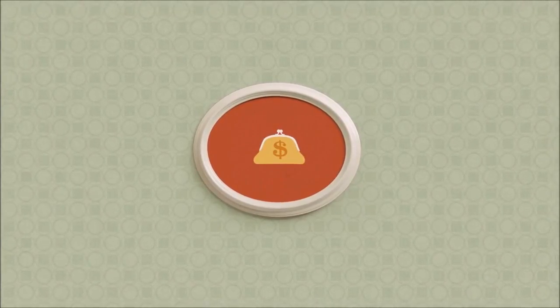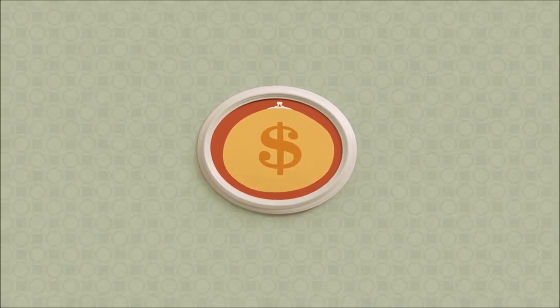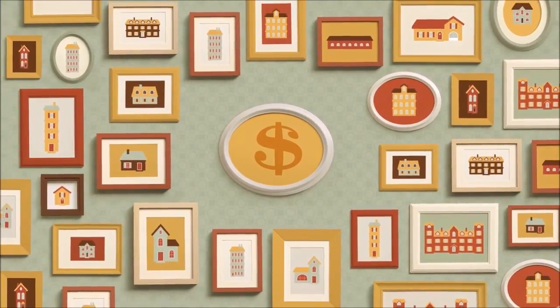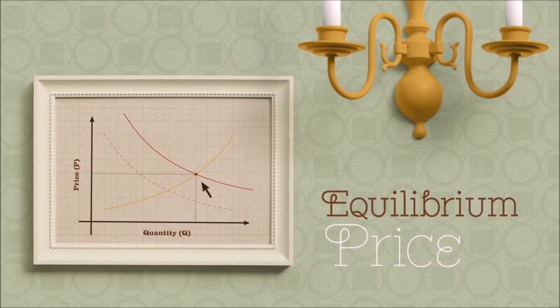As people's income goes up, they are willing and able to buy, so more houses are demanded at all price levels, resulting in a higher equilibrium price.